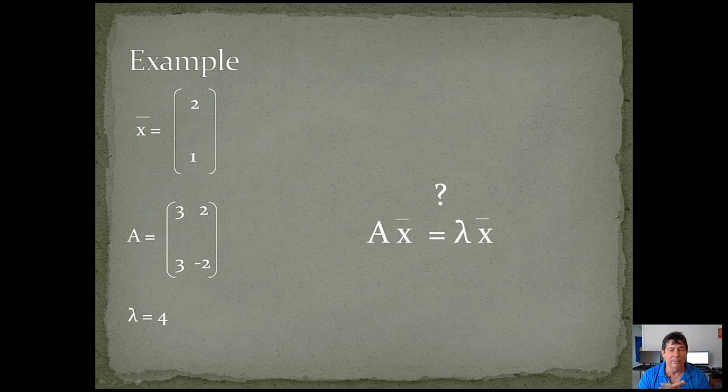So here's an example. Here we have this vector 2, 1, and A is 3, 2, 3, negative 2, and the eigenvalue is 4. You can see that where it says lambda equals 4. So what we want to know is A times x, does that equal lambda times x? So that's what we're looking for.